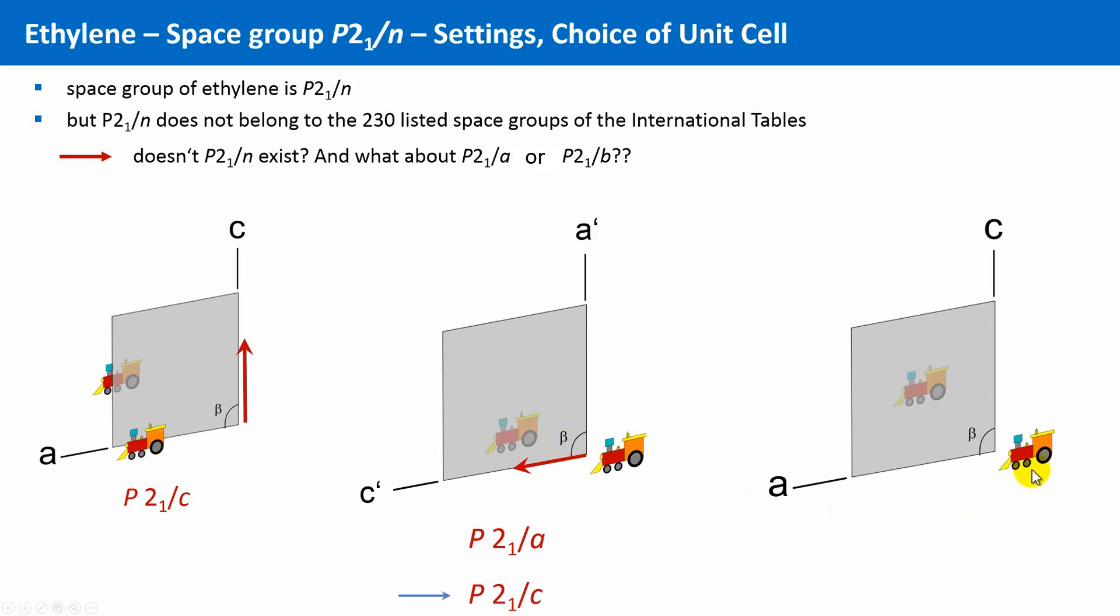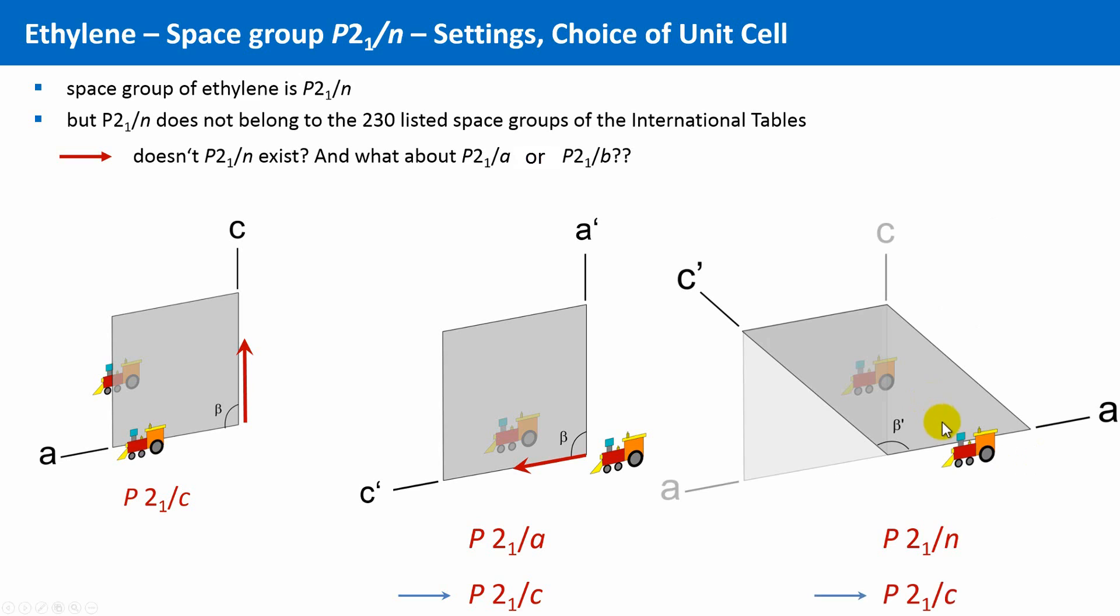So, space group P21/n. This means first mirroring at this plane and then a diagonal glide along this direction. So, how can we convert this cell into the standard space group P21/c? We have to redefine the orientations of the axis in such a way that this diagonal will become the new c direction. So, our new cell looks like this. Please note that this also changes the angle beta in contrast to the case before where only the two axes a and c were interchanged.